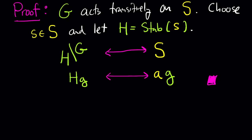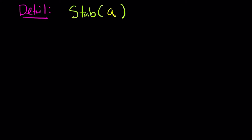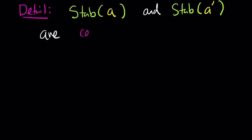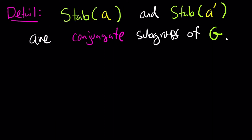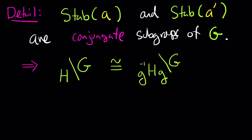There's a detail in this proof worth looking at more closely: we picked H to be the stabilizer of one element s. The stabilizers of two different elements in a G-set on which G acts transitively — say a and a-prime — are conjugate subgroups. In other words, if a-prime can be obtained from a by the action of little g, then the stabilizer of a-prime is g-inverse times the stabilizer of a times g. Since stabilizer subgroups are conjugate subgroups, it follows that G mod H and G mod g⁻¹Hg are isomorphic as G-sets.